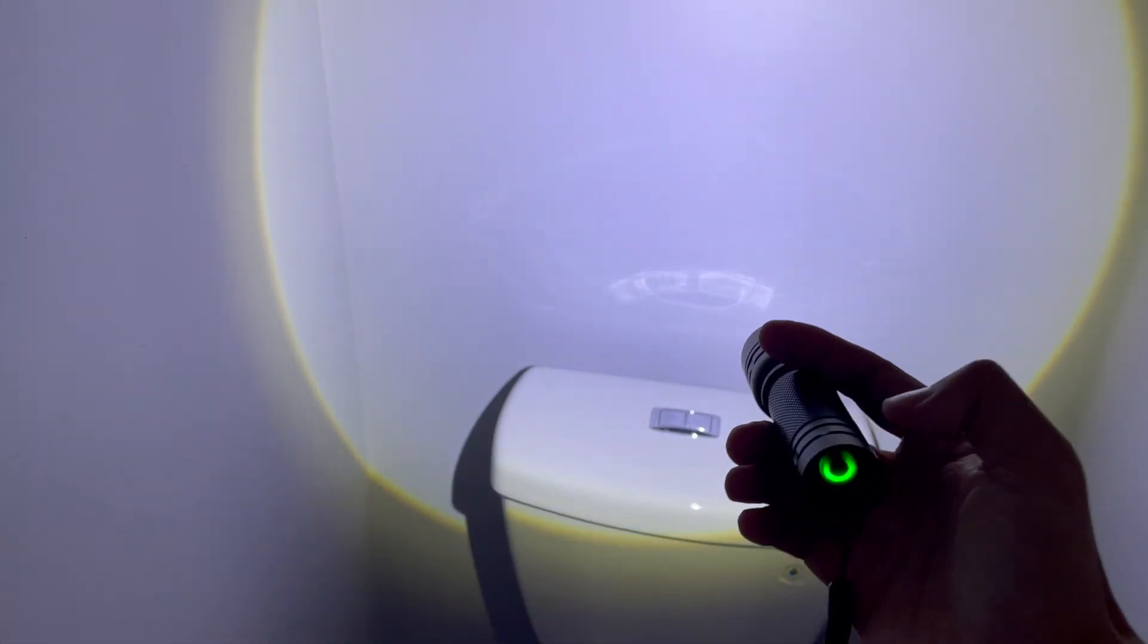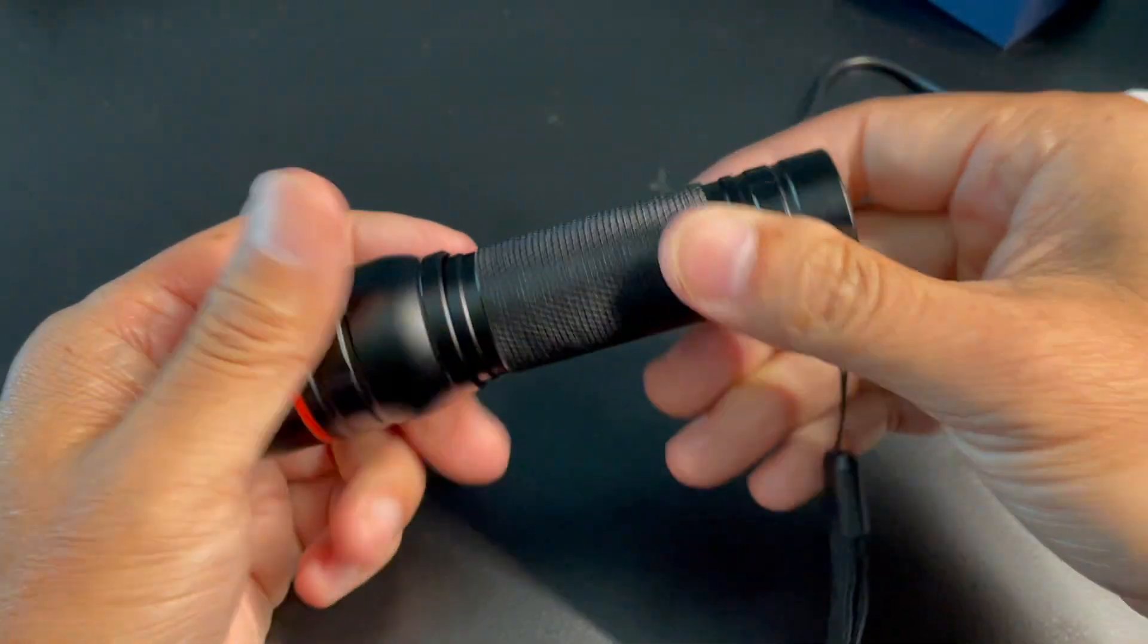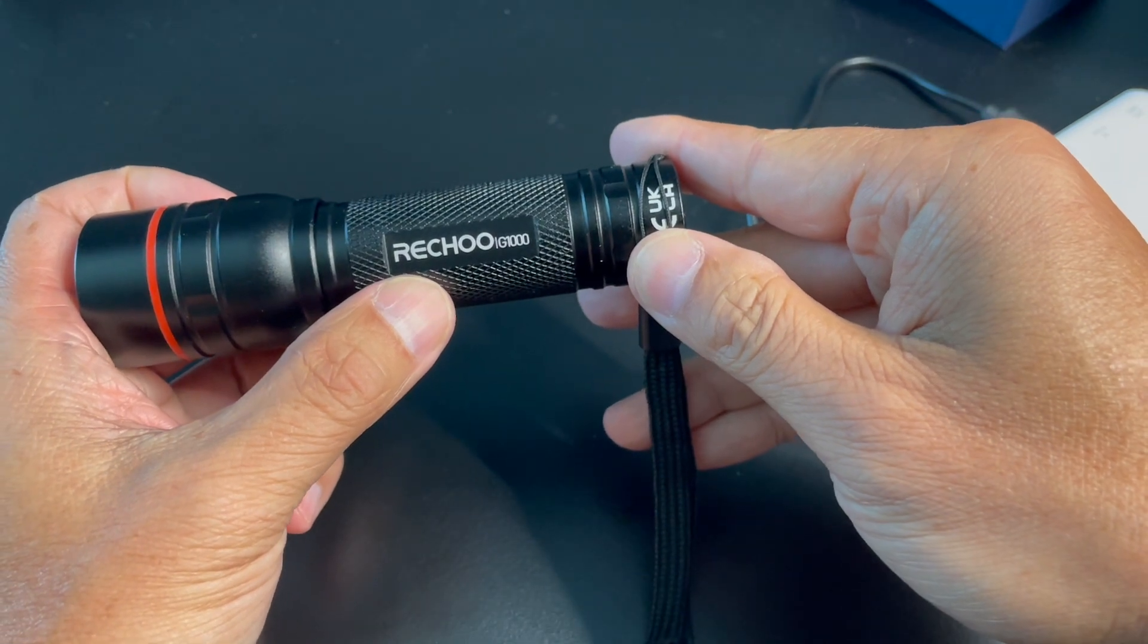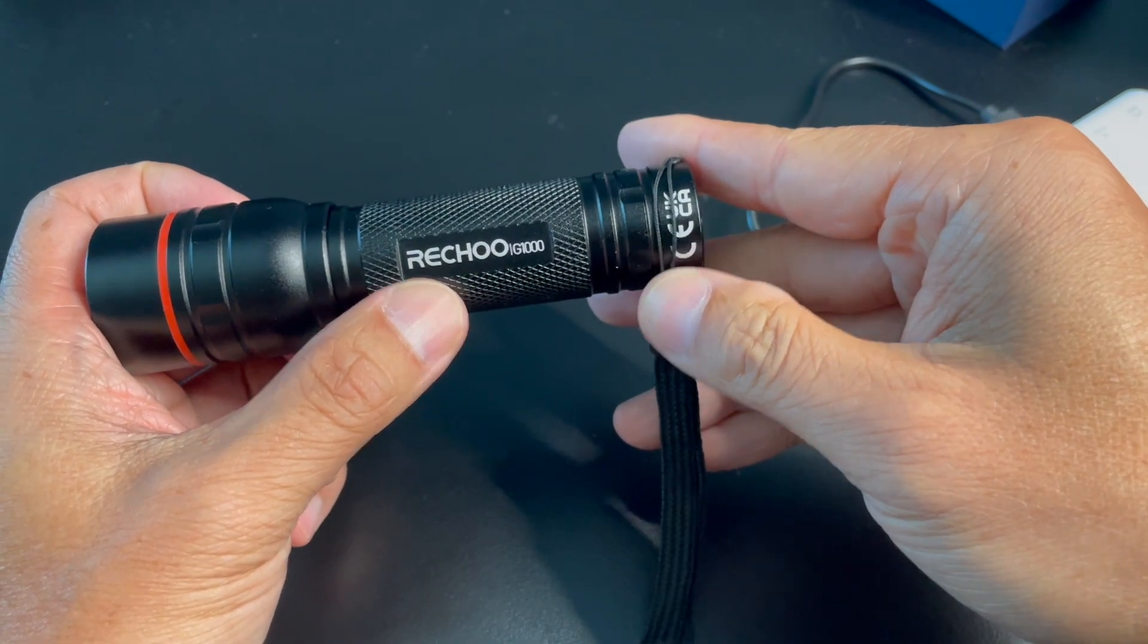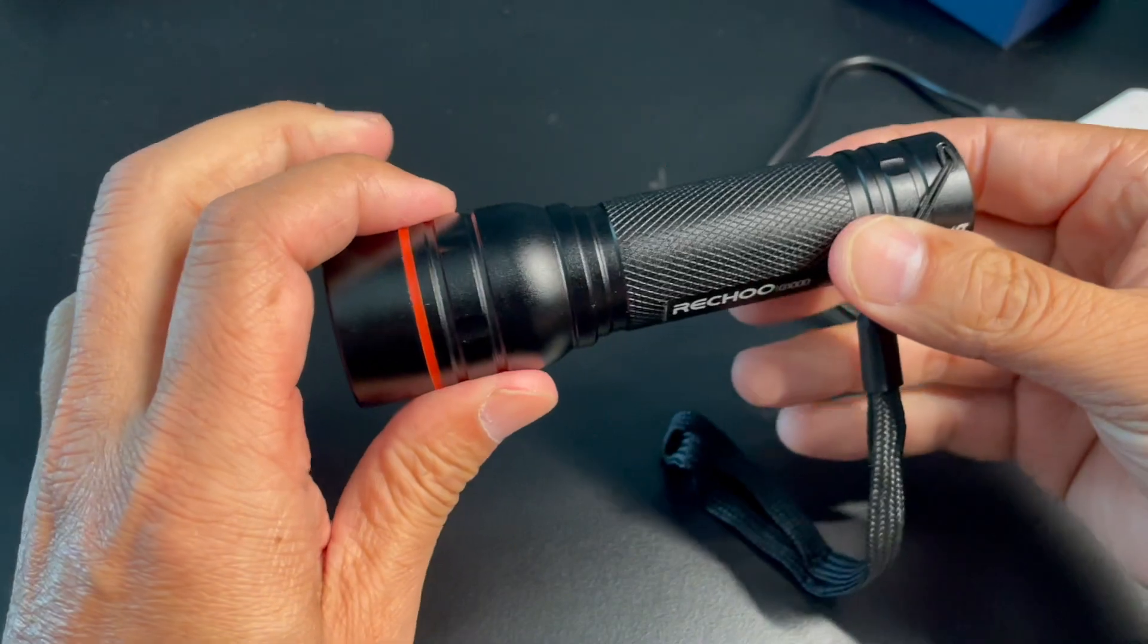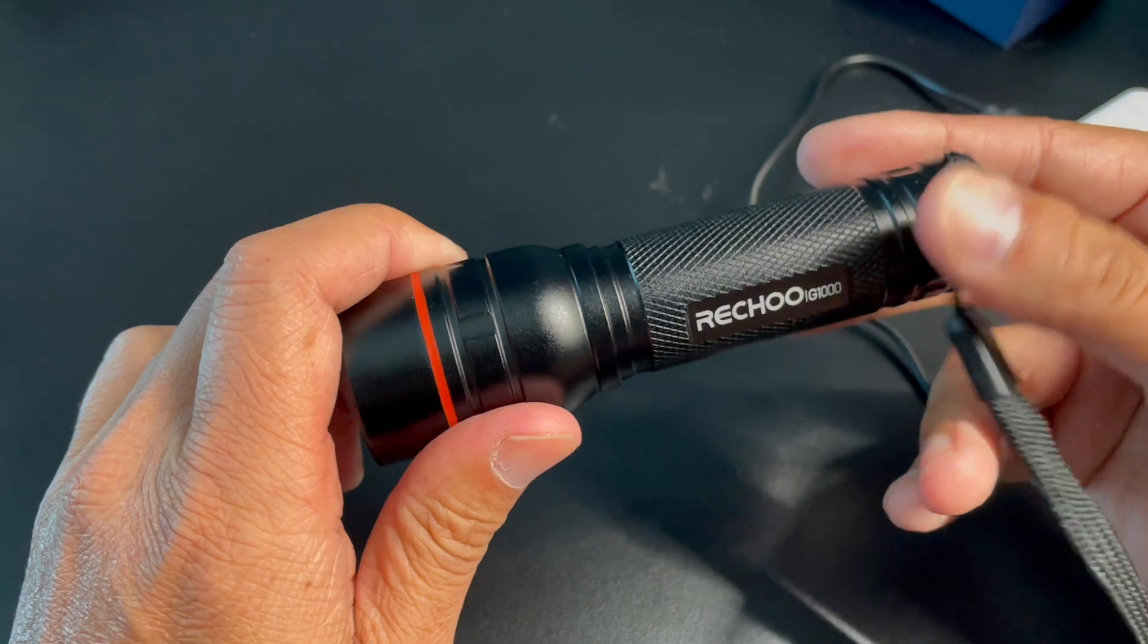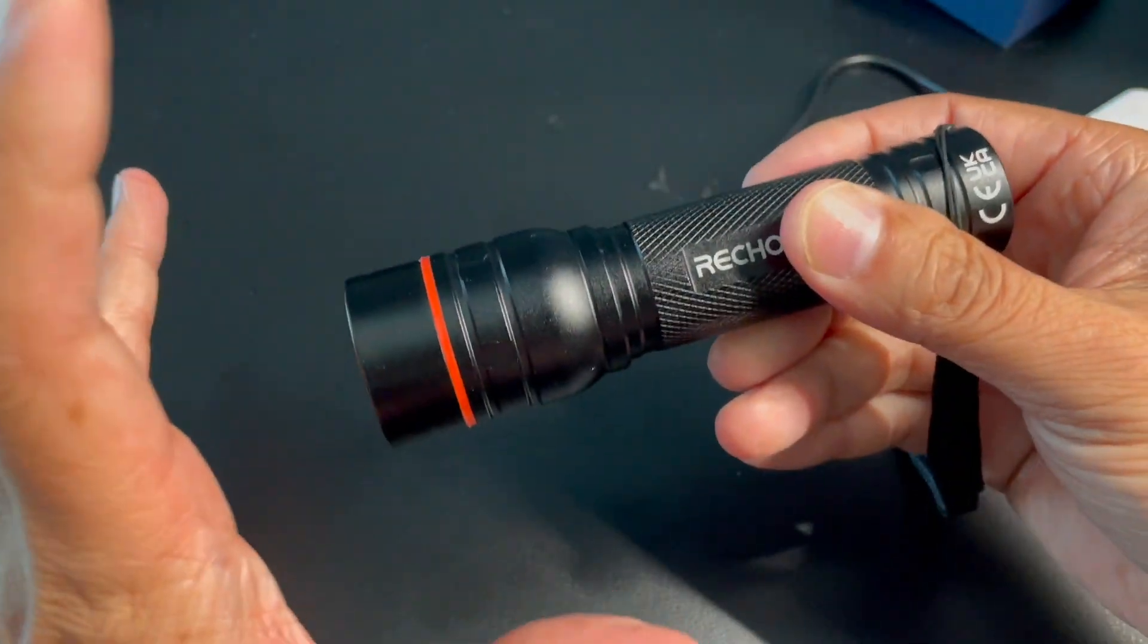Simple and efficient. Overall, for 10 bucks, totally recommend this. This is the Rechu IG-1000, I guess there's a model number on there. Check this out on Amazon. Got great reviews, 4.5 over 1200 ratings. I'll put the link in the description. Let me know if you have any questions.